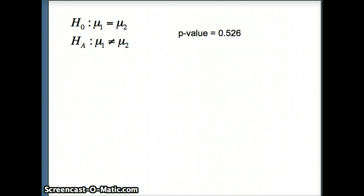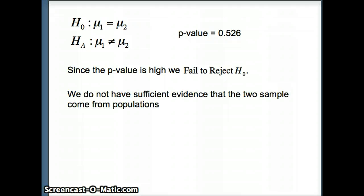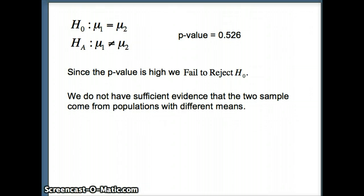H₀ and Hₐ with a very large p-value. If the p-value is high, we have to fail to reject H₀, which means we cannot throw this out, which means it's possible that that's still correct. We do not have sufficient evidence that the two samples come from populations with different means. There's a chance the two samples came from populations with exactly the same mean.